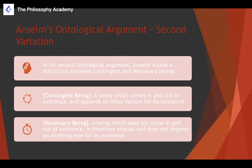A contingent being has two characteristics: first, it comes in and out of existence. Humans, for example — Winston Churchill didn't exist in 1400, came into existence in the early 1800s, and came out of existence in the 1960s. He shifted from a state of non-existence through most of human history, came into existence at birth, and left existence at death.